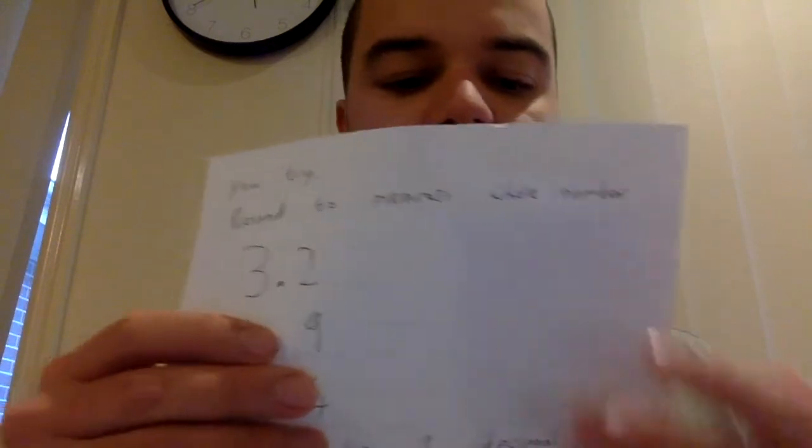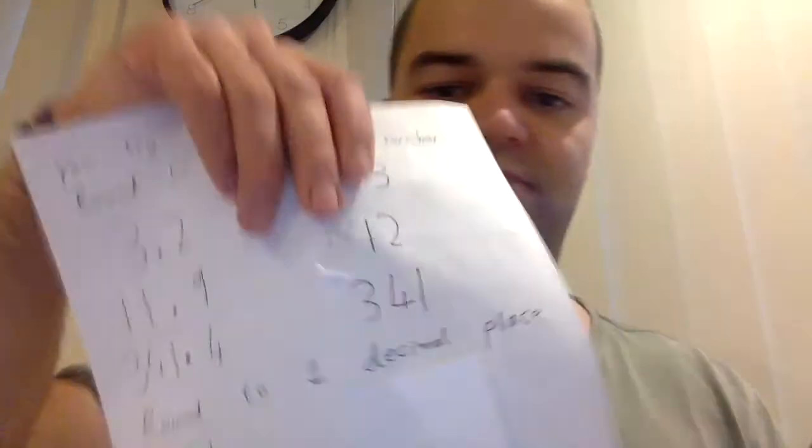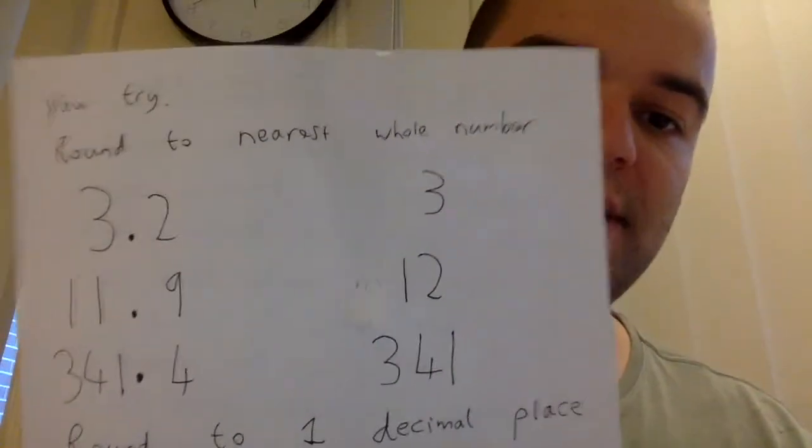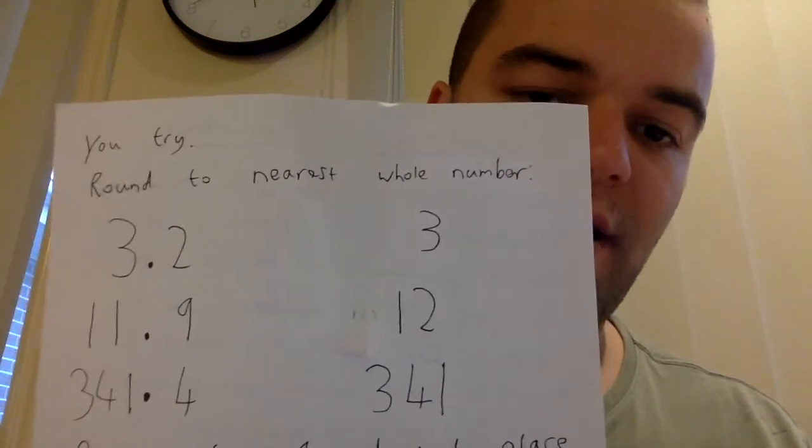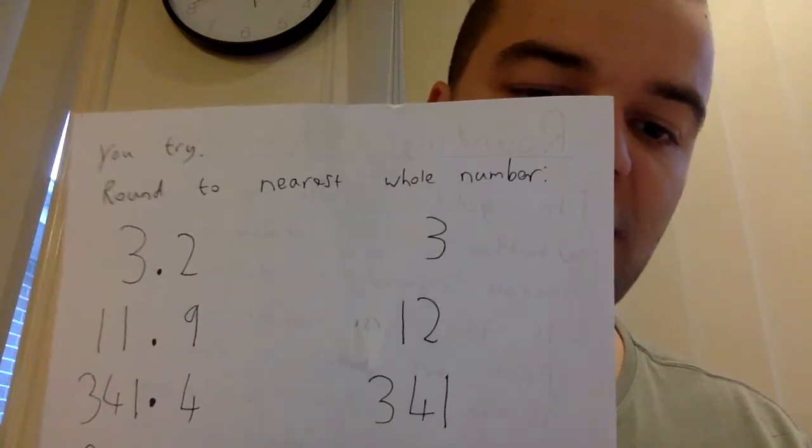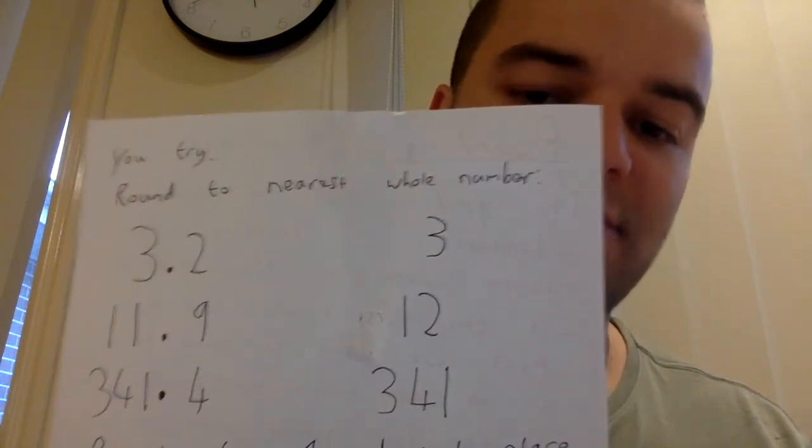So 3.2, we've rounded down to become 3. 11.9, we've rounded up to become 12. And 341.4, we've rounded down to become 341.